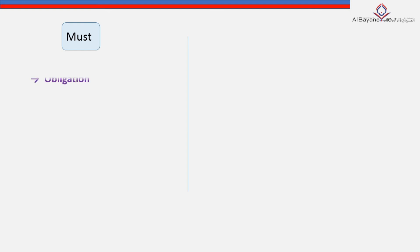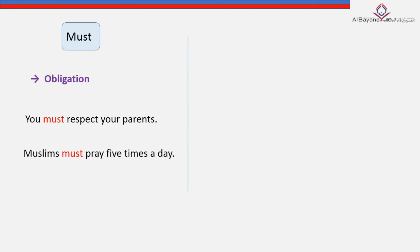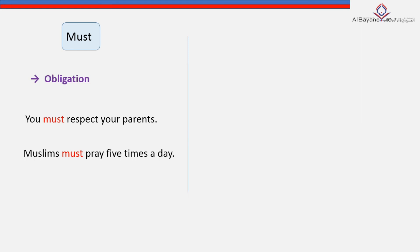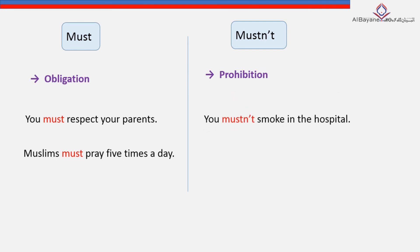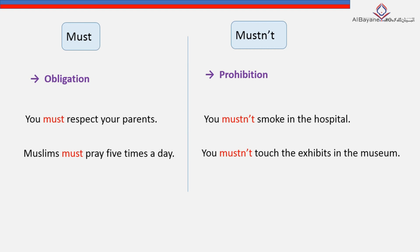The modal verb 'must' can be used to express obligation. For instance: 'You must respect your parents,' or 'Muslims must pray five times a day.' On the other hand, 'mustn't' is the negative form of 'must,' and its function is prohibition. For example: 'You mustn't smoke in the hospital,' or 'You mustn't touch the exhibits in the museum' — meaning you're not allowed to. Note: we don't pronounce the 'T' — we say 'mustn't,' not 'must-nt.'